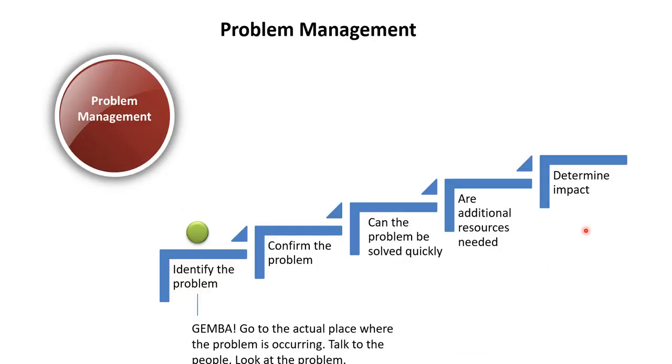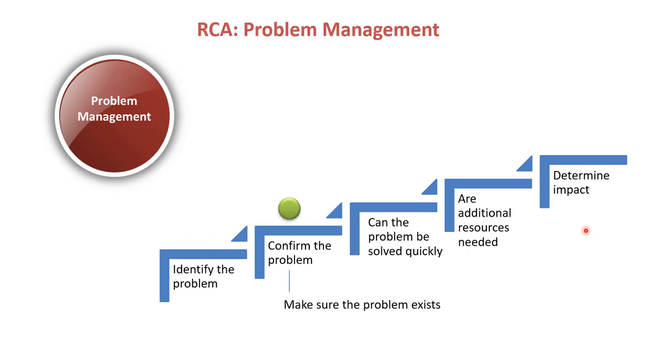Now we have a problem management issue. The first thing we want to do is identify the problem. This is where you get out to the Gemba. You go to the actual place where the problem is occurring. You talk to people, you look at the problem. There may be a situation where you don't even have a problem. So that's step number two, you want to make sure that a problem exists.